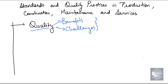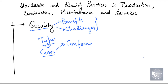Then we will learn about the types of quality and different methodologies implemented for maintaining quality. After that, we will learn about the costs associated with quality. The different types of cost are the cost of conformance and the cost of failure. The cost of conformance is the cost you will have to pay before the final product, and the cost of failure is the cost you will have to bear in case the product is a failure.